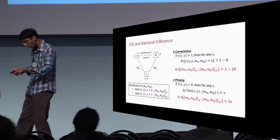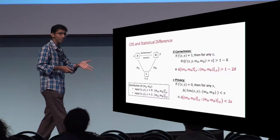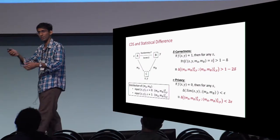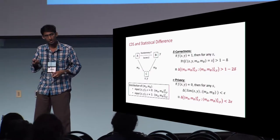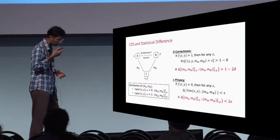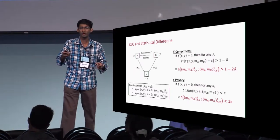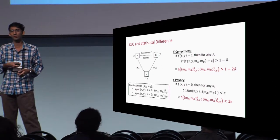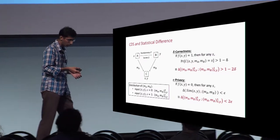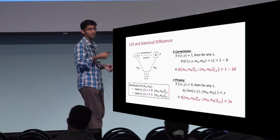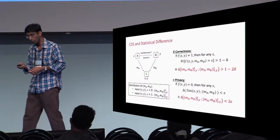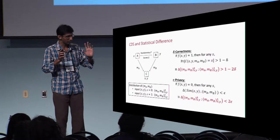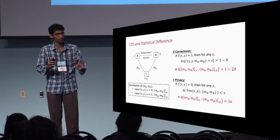The statistical difference problem is the same thing, except instead of decomposably sampled distributions you have efficiently sampled distributions — small circuits that sample them. This problem has been studied extensively and is complete for the class of problems having statistical zero-knowledge proofs. This connection between CDS and the statistical difference problem enables us to use techniques developed for statistical zero-knowledge proofs to prove results about the communication complexity of CDS. So the view I want to take is that CDS is more like statistical zero-knowledge.